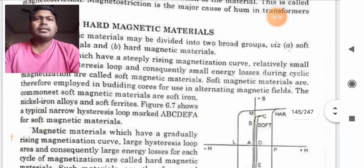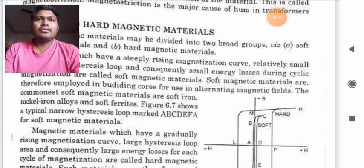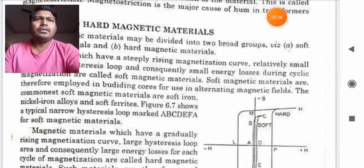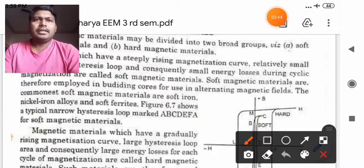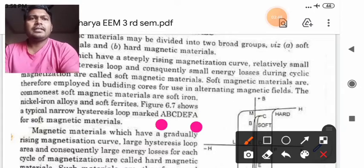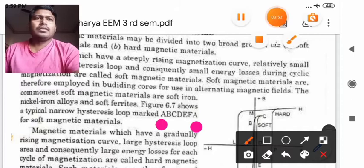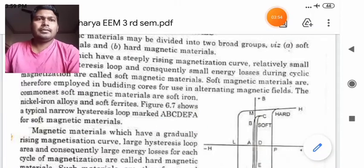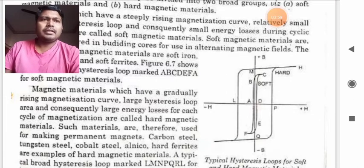This diagram shows you a typical narrow hysteresis loop marked as A, B, C, D, E, F, A. So a loop will be completed if only and if and only if it will be started by a point and it will end through that point. Here A is the starting point and A is again the ending point. So we can consider it as a loop. Now so this is the diagram of a narrow soft magnetic material.